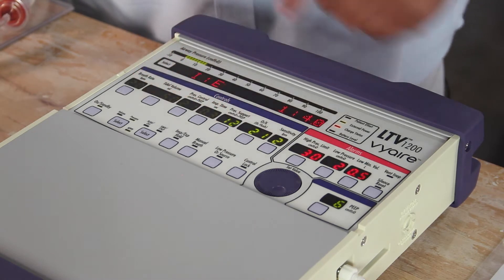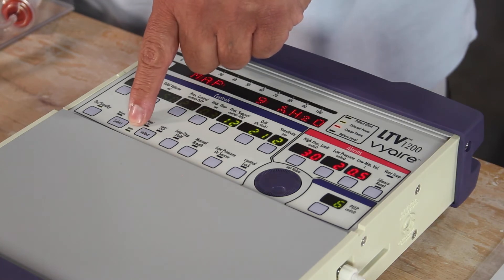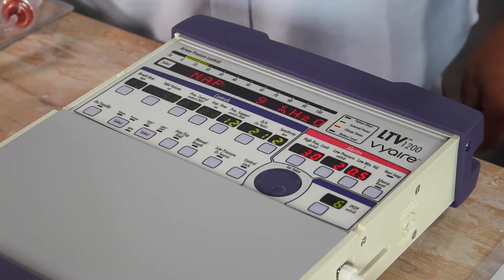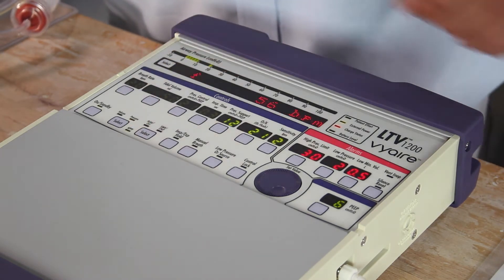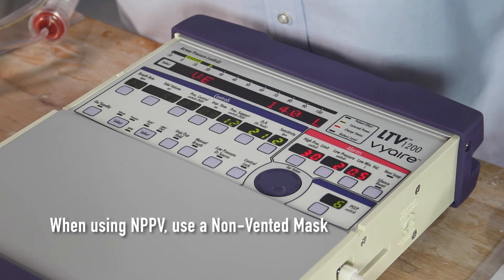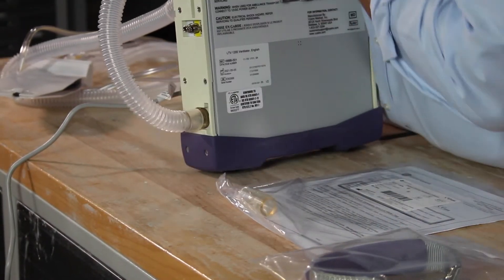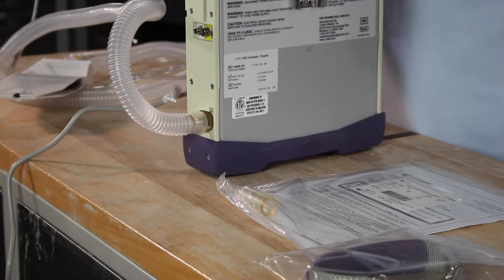Whatever's dimmed is not currently being used. We know we're in a pressure mode of ventilation, non-invasive positive pressure ventilation. The key thing when we're in NPPV is we want to use a non-vented mask because our exhalation valve is located on the circuit itself.